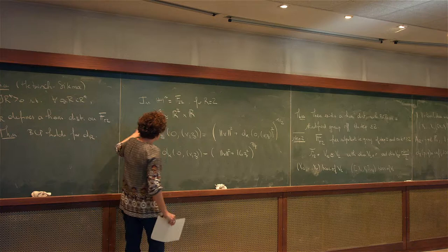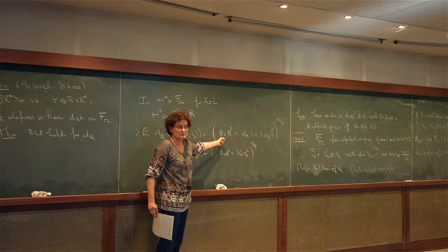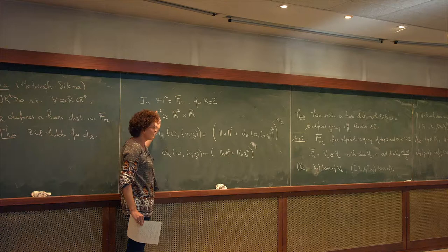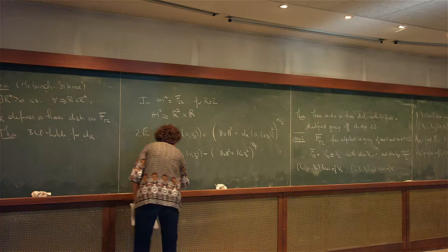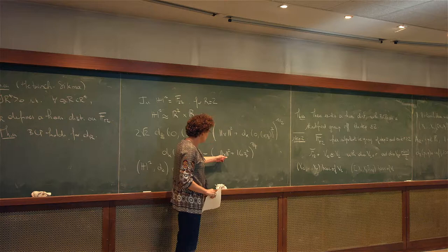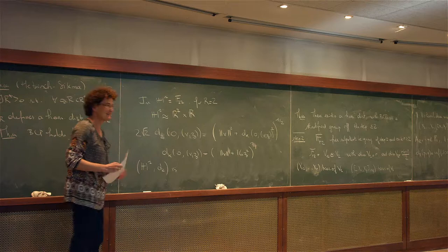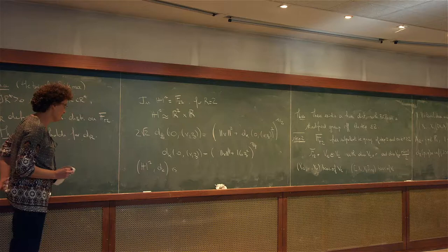One knows that the Koranyi distance does not satisfy BCP on H^1. But if you look at this distance D_2 — adding the Euclidean pseudo-distance in the horizontal component and taking the L^2 mean — by a kind of magic argument, this new distance satisfies BCP on the Heisenberg group. This distance has already appeared in the literature, because Lee and Naor use it to prove that H^1 equipped with D_2 is of negative type, which means that the snowflake H^1 equipped with the square root of D_2 is isometric to a subset of a Hilbert space. They used that to give a counterexample to a famous conjecture in computational complexity.